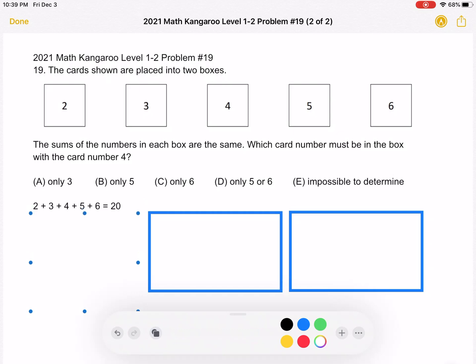And we know that the sum of the numbers of the cards, we have 2 plus 3 plus 4 plus 5 plus 6, which is equal to a sum of 20.